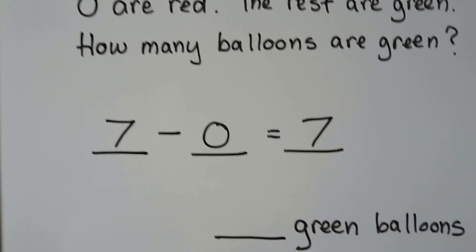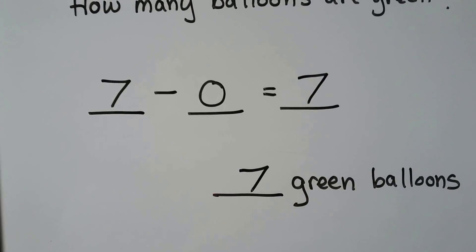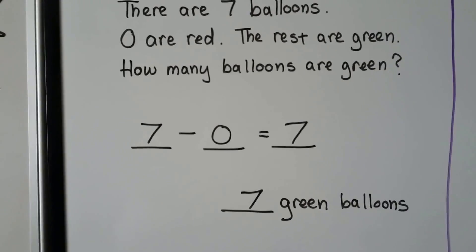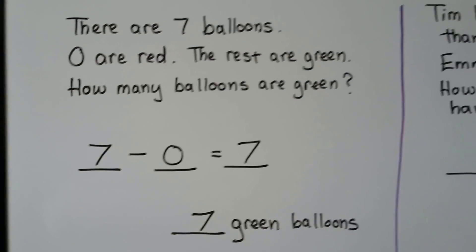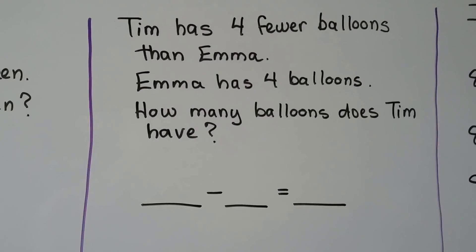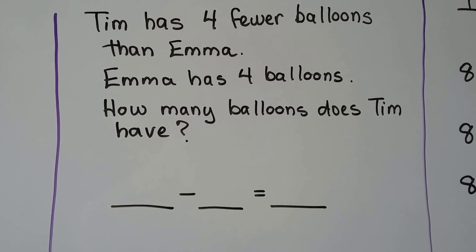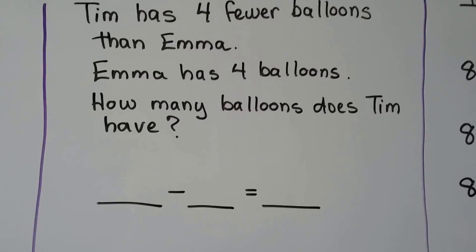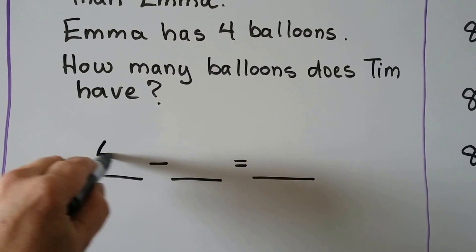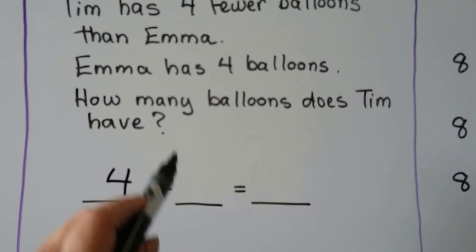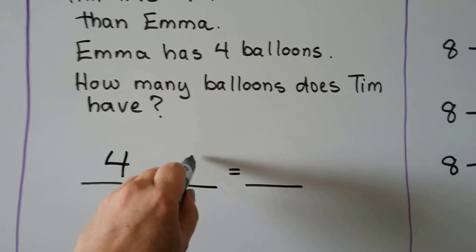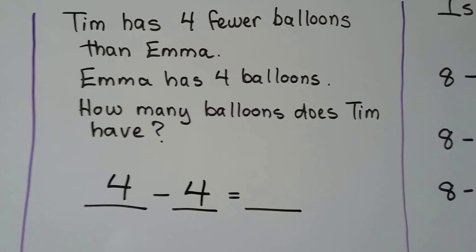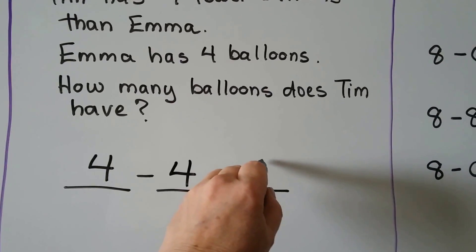There are seven green balloons. Tim has four fewer balloons than Emma. Emma has four balloons — how many balloons does Tim have? Emma has four balloons and Tim has four fewer, that's minus four. How many balloons does Tim have? He has zero balloons.